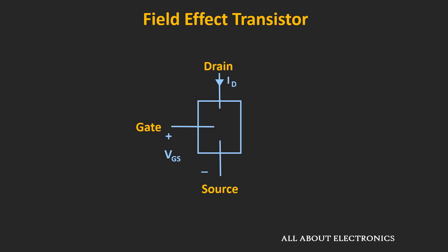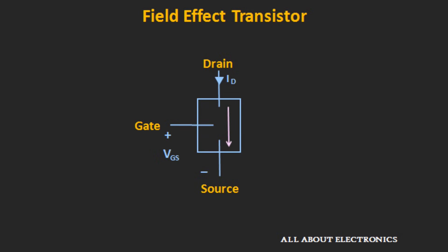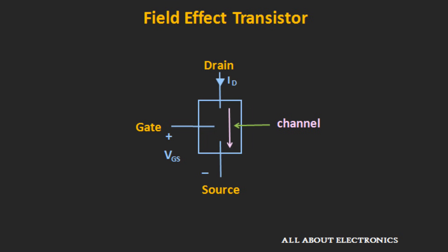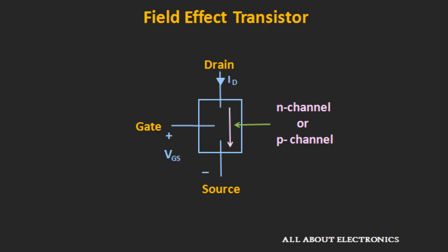The FET has three terminals: gate, source, and drain, and the current flows between the drain and the source terminals. The path through which the charge carriers flow is known as the channel. If this channel is made up of N-type semiconductor, then the FET is known as the N-channel FET. Likewise, if the channel is made up of P-type material, then it is known as the P-channel FET.